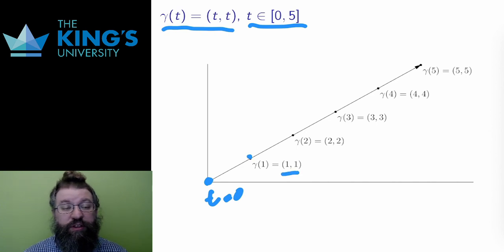After 2 seconds, the curve is at (2,2). After 3, 4, and 5, so on. Since the time range stops after 5 seconds, so does the curve.